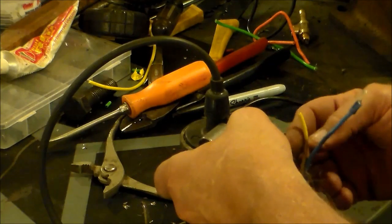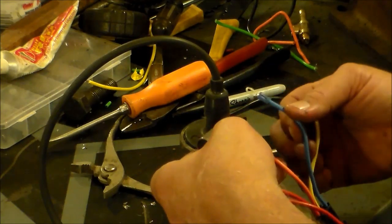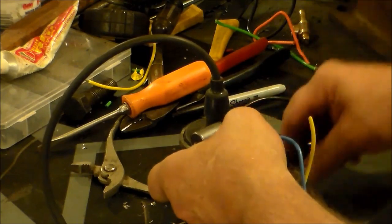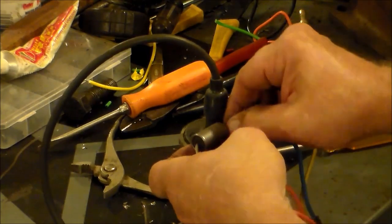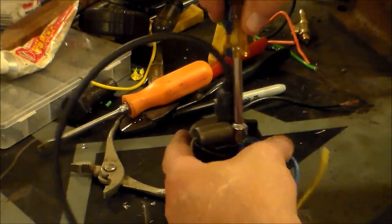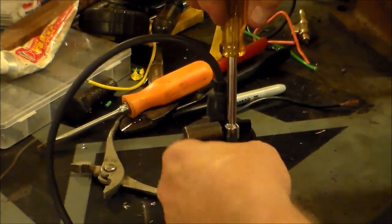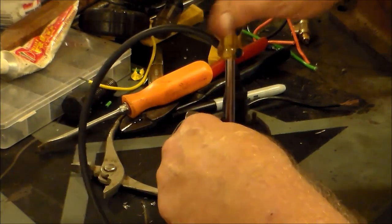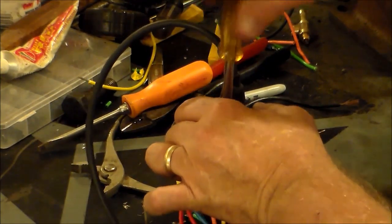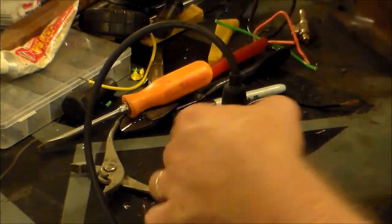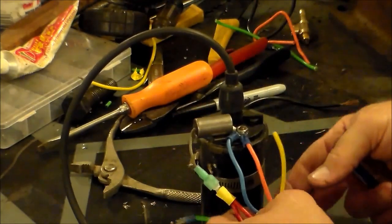That condenser has that bracket kind of welded on to it. It's not just clamped, so it's a good sturdy connection. All this leaves me now is my green wire which is my 86 wire.